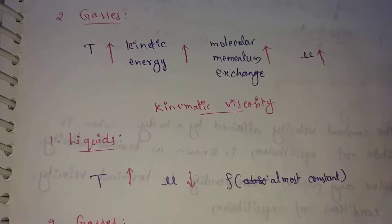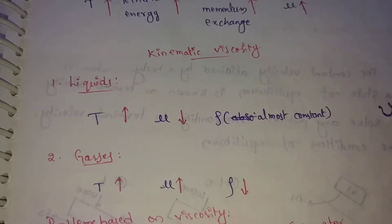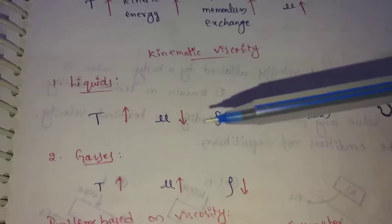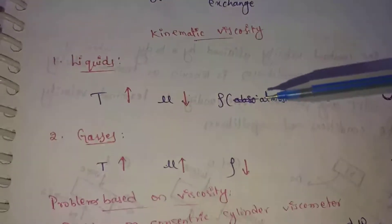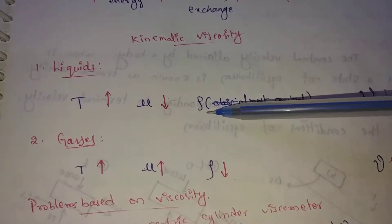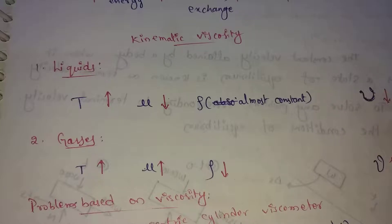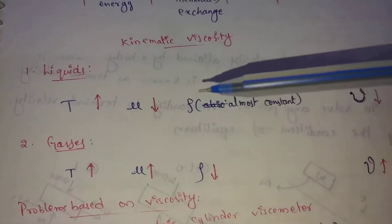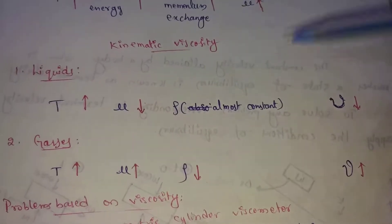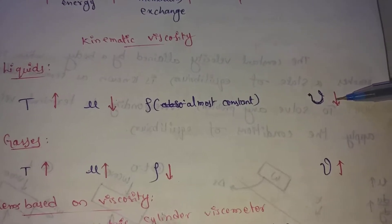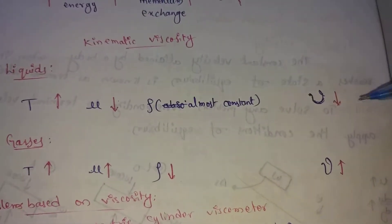Next, kinematic viscosity. For liquids, as temperature increases, the dynamic viscosity decreases. Since kinematic viscosity equals dynamic viscosity divided by density, and both decrease, the kinematic viscosity for liquids also decreases with temperature increase.